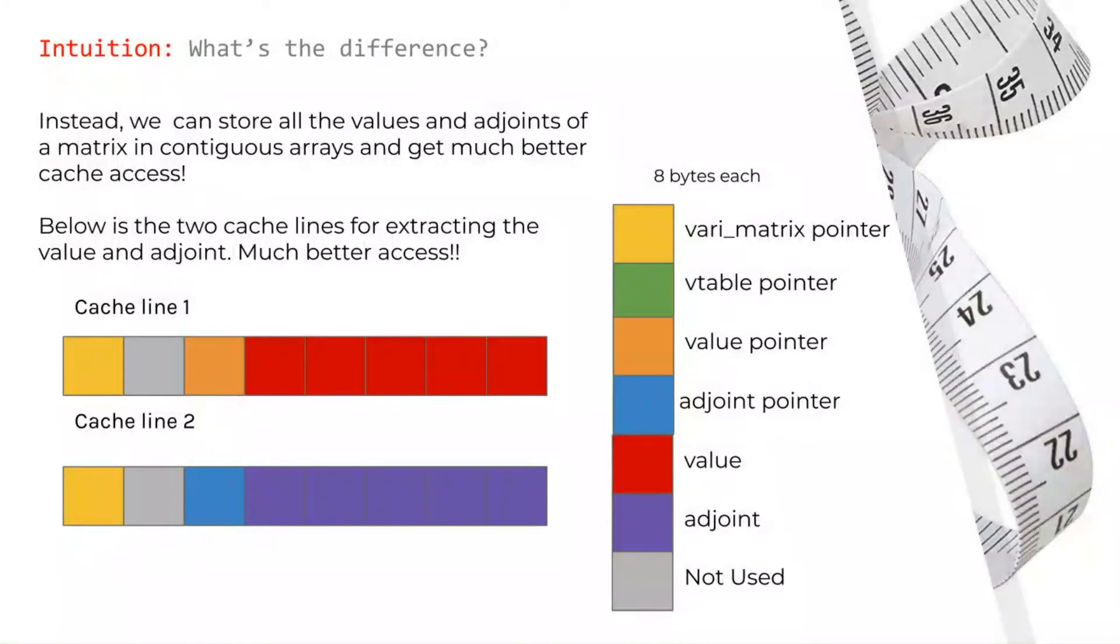By instead keeping all the values and adjoints of the matrix in contiguous arrays, we can trade the cost of two additional pointers for much nicer cache access. In the below example for adding the values of one var and the adjoints of another, we can see that our cache lines are much more efficient.